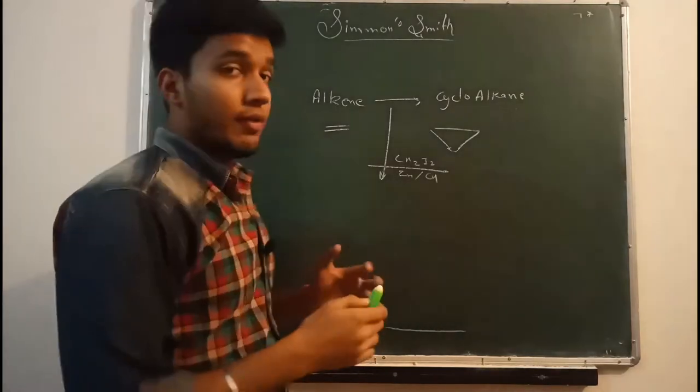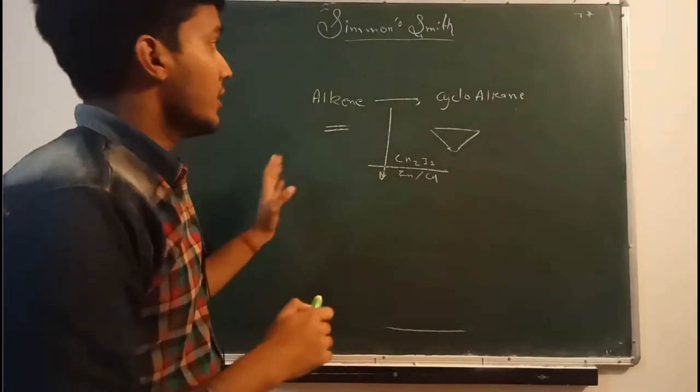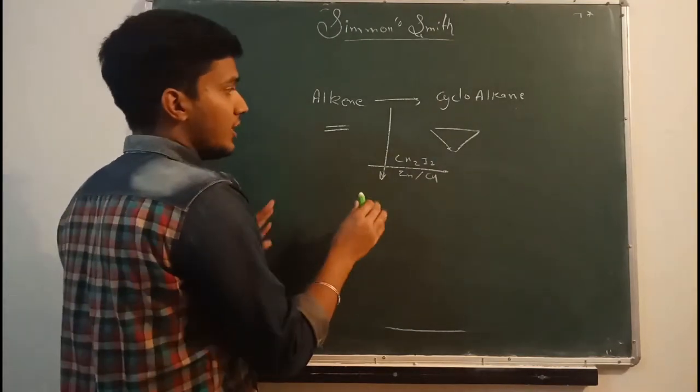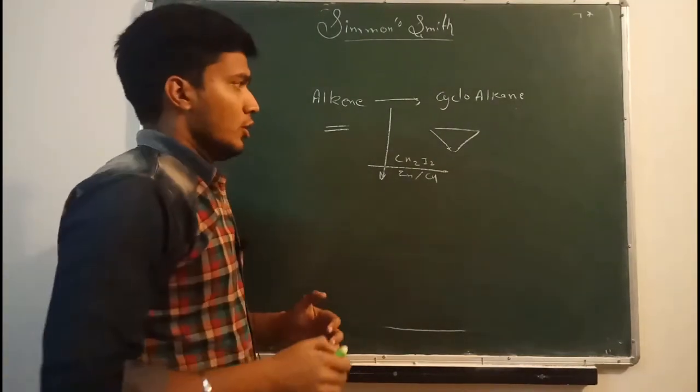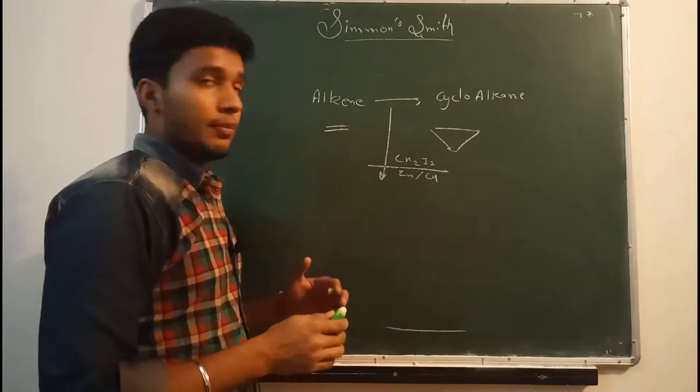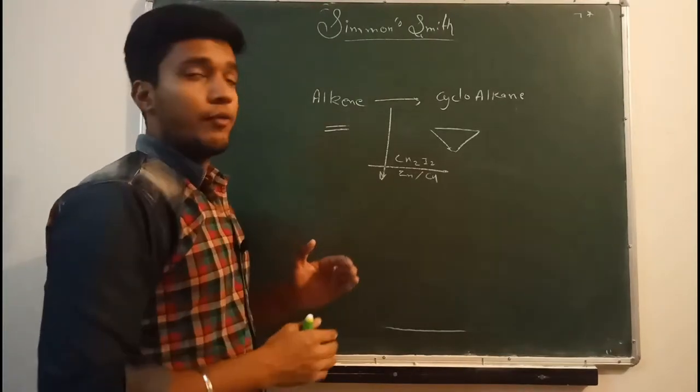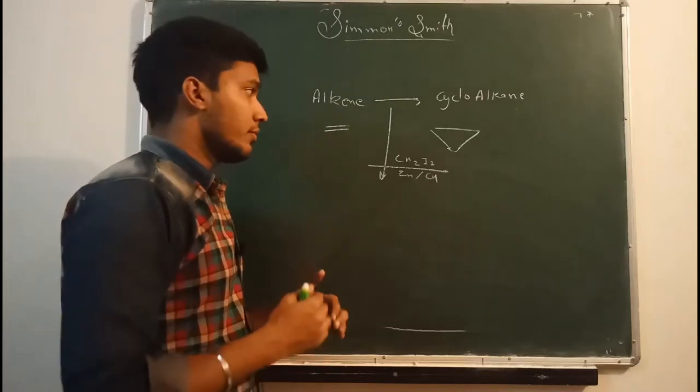The basic thing we will have to note down in this conversion is that the reagent is very electrophilic. So if the reagent is very electrophilic, it means the alkene or the carbon chain must be very electron rich. So the reaction will be very fast.